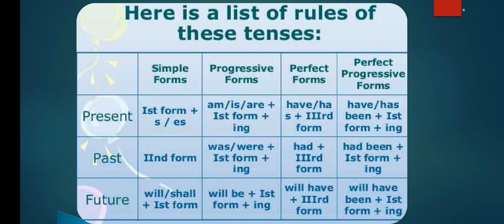Future simple form: will/shall plus first form. Progressive form: will be plus first form plus ING. Perfect form: will have plus third form. Perfect progressive form: will have been plus first form plus ING.